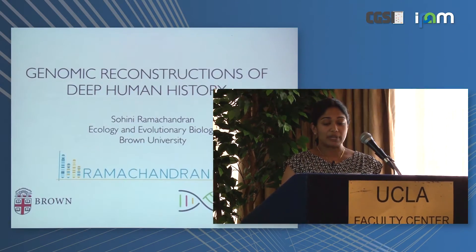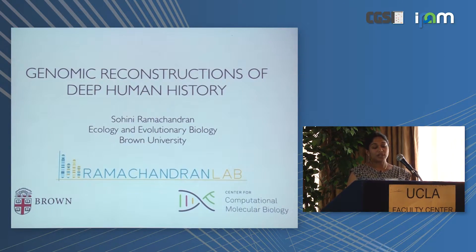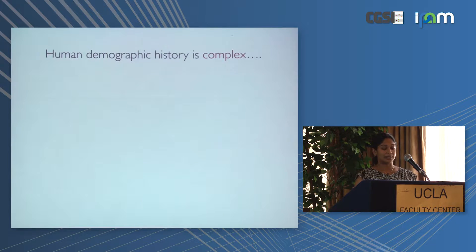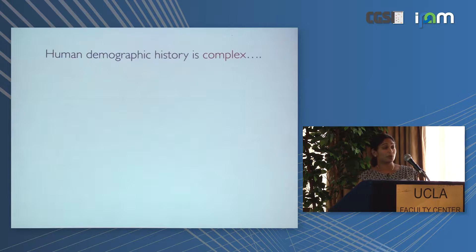I'm a population geneticist particularly interested in estimating the parameters of human evolutionary history. I'm going to try to make a case for why you might want to be interested too. What I think is really interesting about our species is partly that we're self-obsessed — think about how many buildings on a university campus are devoted to the study of our own species. Genetics plays a really important role in understanding human evolutionary history, but there are a number of other fields we have to interact with.